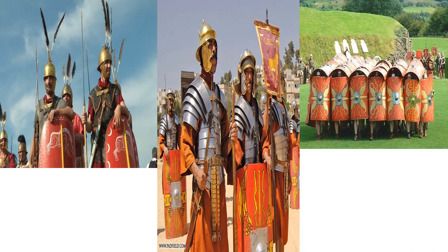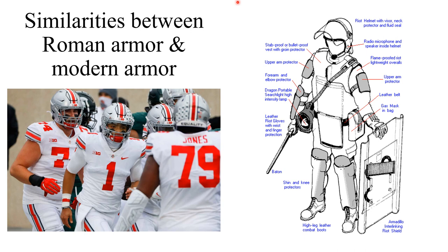Here are modern reenactors wearing various types of Roman armor. The first group is pre-Marian, based on the simpler Monte Fortino helmets often decorated with feathers, oval-shaped shields, and what appears to be Lorica Hamata chainmail. The second group impersonates later Roman soldiers with Gallic helmets, Lorica Segmentata, and scutum shields — much better armor but much more expensive. You can also see similarities between Roman armor and modern gear: football pads resemble the Lorica Segmentata, and modern riot police use convex shields similar to the Roman scutum.